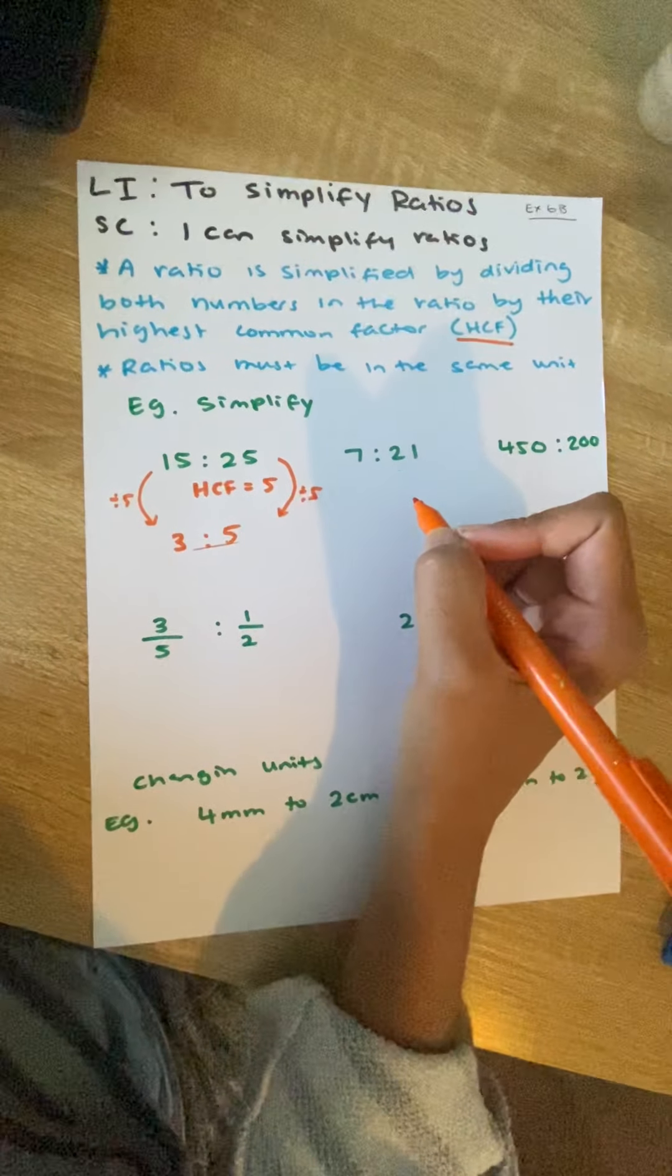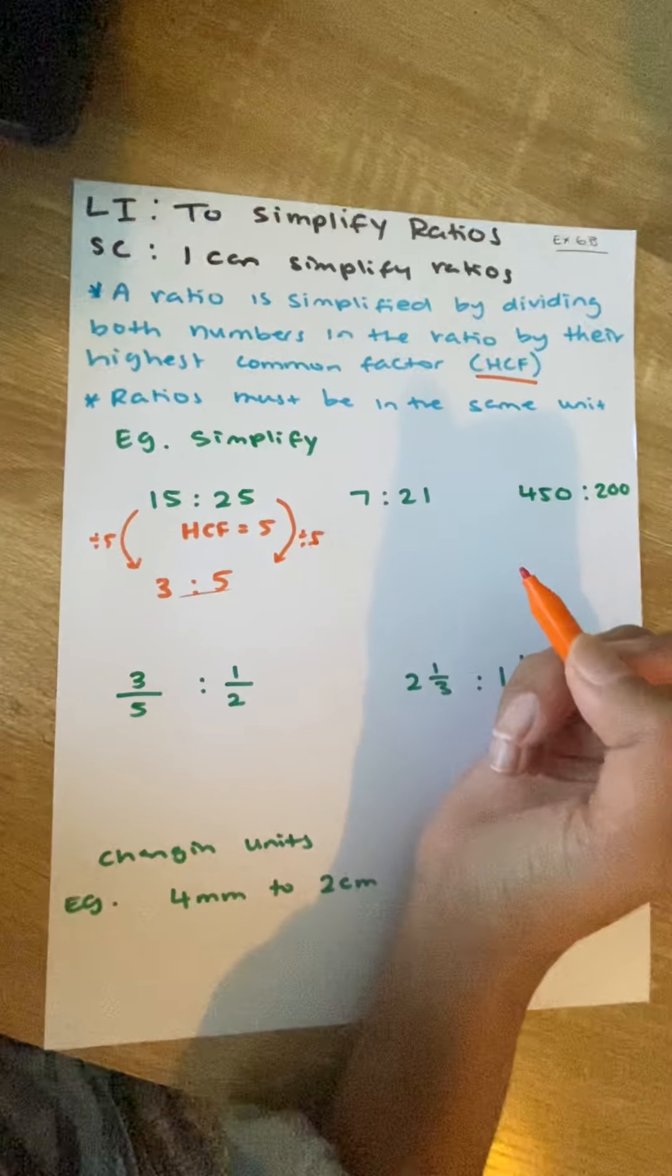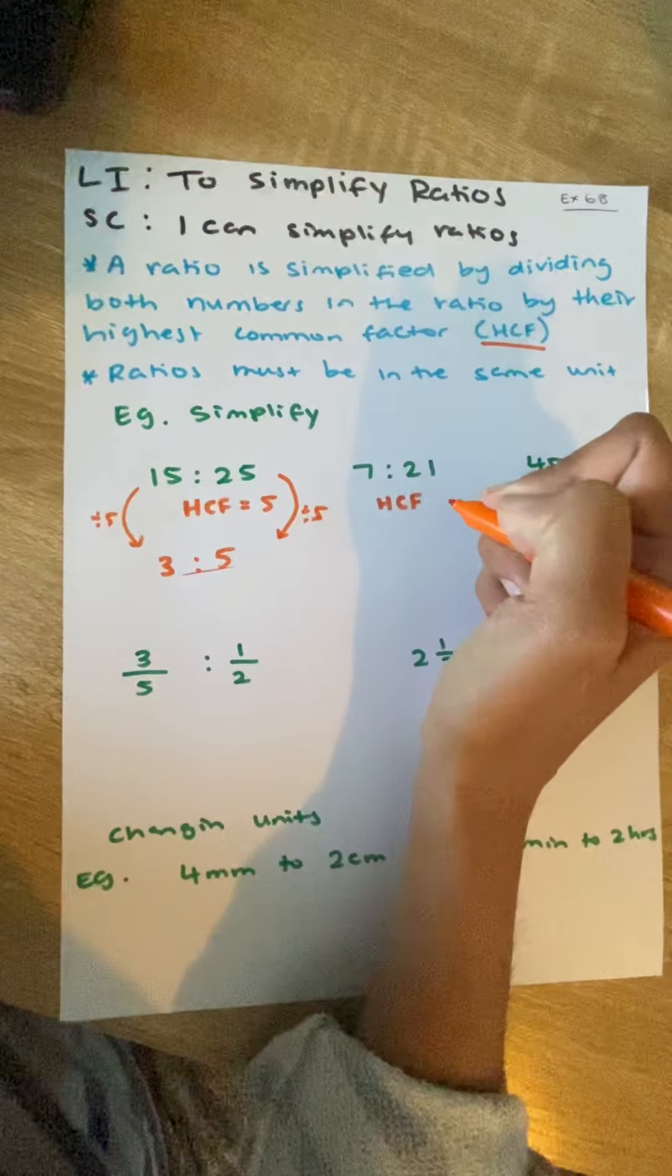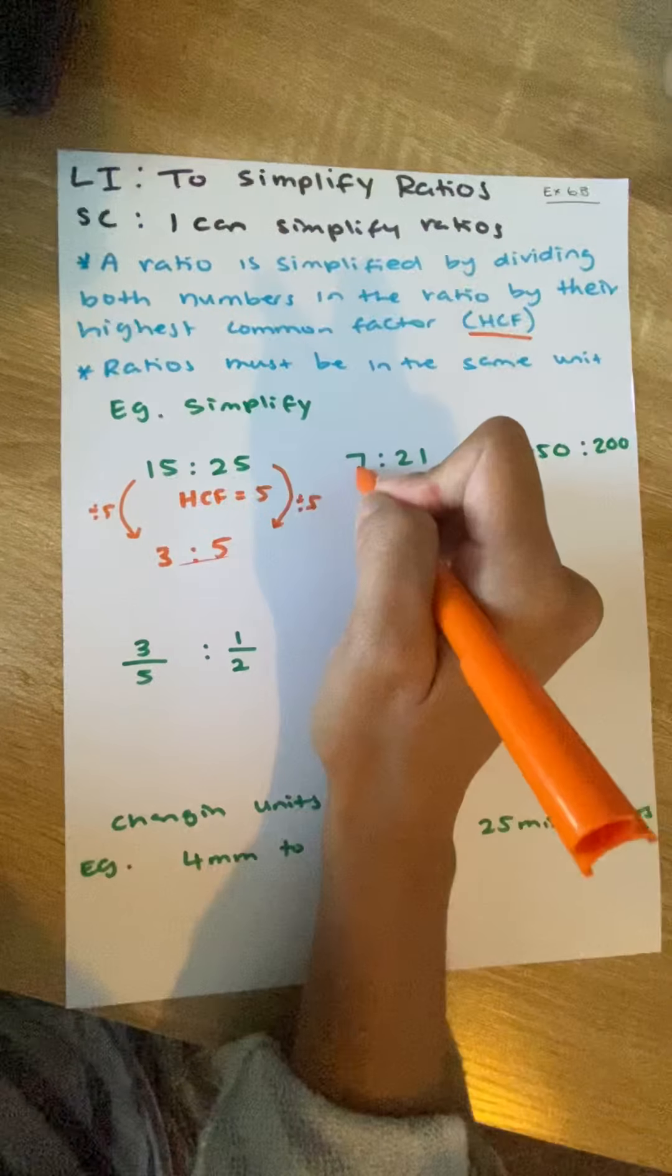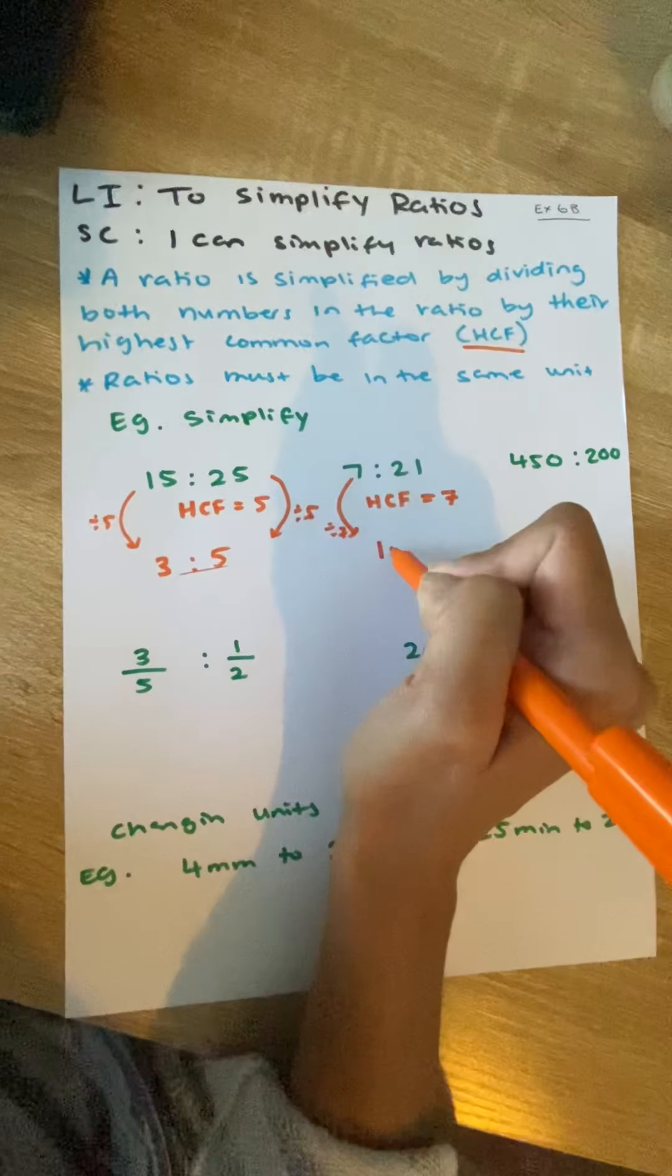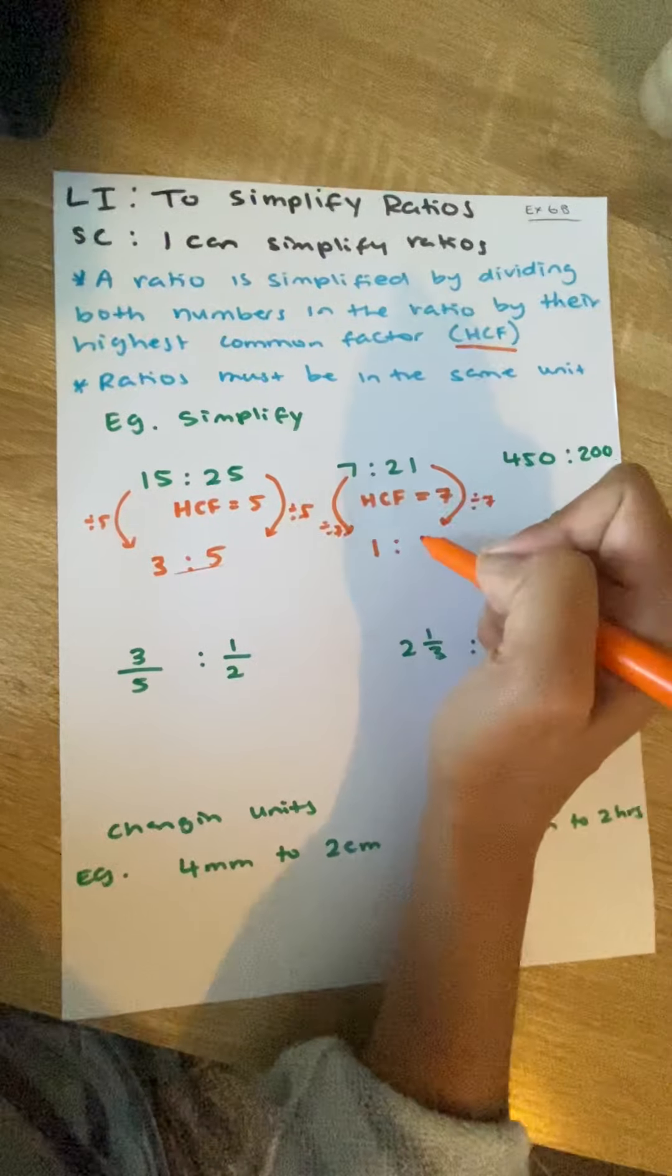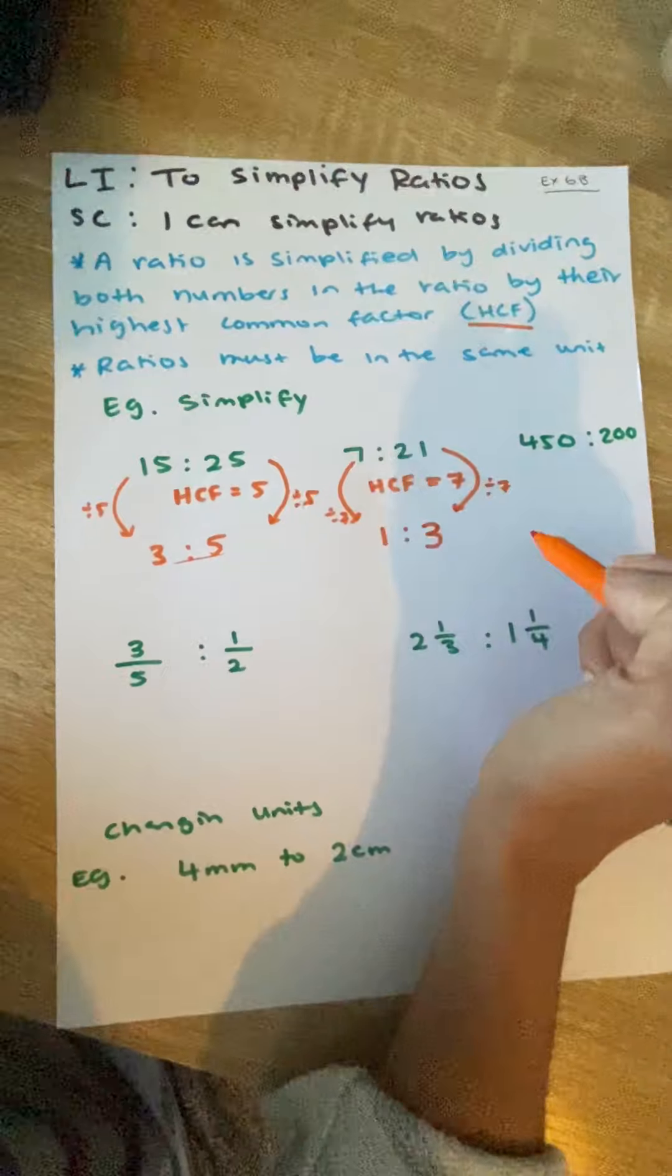Let's have a go at another one. 7 and 21, what numbers go into both 7 and 21? So, we need to think about it. Oh, the highest common factor is going to be 7. So, what is 7 divided by 7? 7 goes into 7 once. 21 divided by 7 is 3. So, 7 to 21 is the same as 1 is to 3.